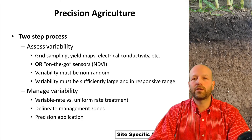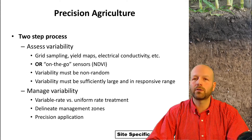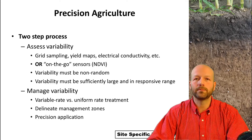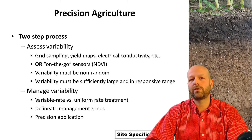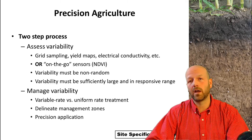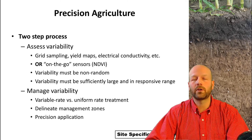I want to switch gears now and talk about precision agriculture. It might seem like an unrelated topic, but precision ag can really be helpful for a lot of the issues we discussed — water quality and other management — especially when managing a lot of acres. When talking about precision ag, it's usually a two-step process: first, assessing the variability of your fields and your operation, and then trying to manage that variability. You can assess variability by looking at soil grid sampling, yield maps, maps of electrical conductivity, and on-the-go sensors such as NDVI that could also be useful in determining variability in a field.